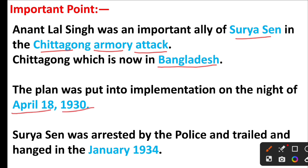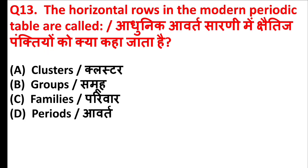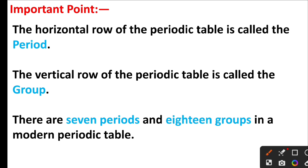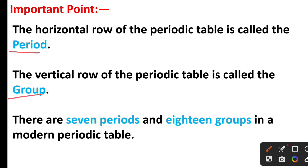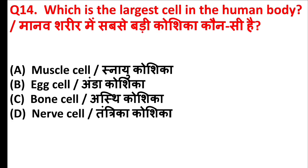The instrument used to study the laws of vibrating strings is — ? The right answer is option D — Sonometer. Who among the following was associated with the Chittagong Armory Raid? The right answer is option B — Anant Lal Singh. Anant Lal Singh was an important ally of Surya Sen in the Chittagong Armory Attack. The plan was implemented on the night of April 18, 1930. Surya Sen was arrested by the police, tried, and hanged in January 1934.